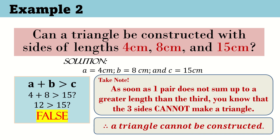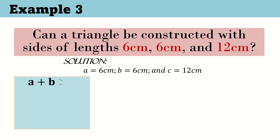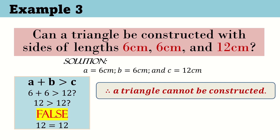Let us proceed to example number 3. We have the given measurements: 6, 6, and 12. Can a triangle be constructed with sides 6 cm, 6 cm, and 12 cm? The sum of the first two sides is 6 plus 6, which equals 12 — the same as the third side. But the sum of the two sides has to be greater than the third side, not equal to it. Therefore, we cannot construct a triangle with sides 6, 6, and 12. As soon as you know that the sum of two sides is less than or equal to the measure of the third side, the sides do not make up a triangle.